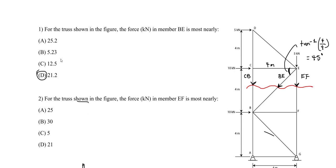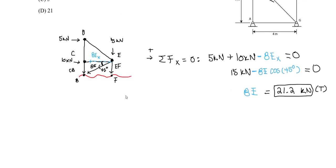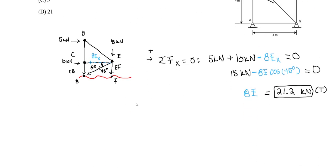For Part 2: for the truss shown in the figure, the force in kilonewtons in member EF is most nearly what? So now we're trying to solve for EF. We do the same process and look at the same free body diagram — the only difference is we're solving for EF. I can solve for EF by taking the moment about point B. Why? If I take the moment about B, member BE goes away, member CB goes away, and the only unknown remaining is EF. The external applied forces are all known.